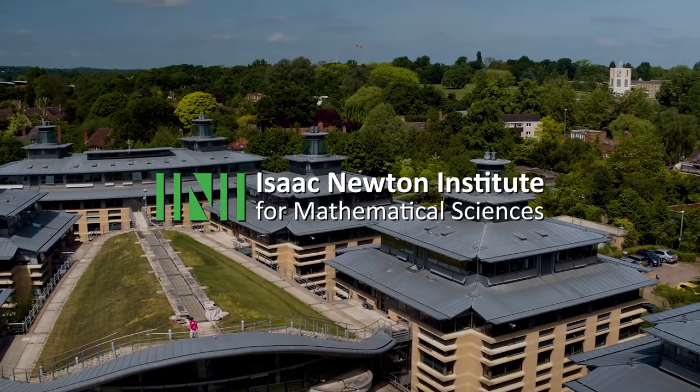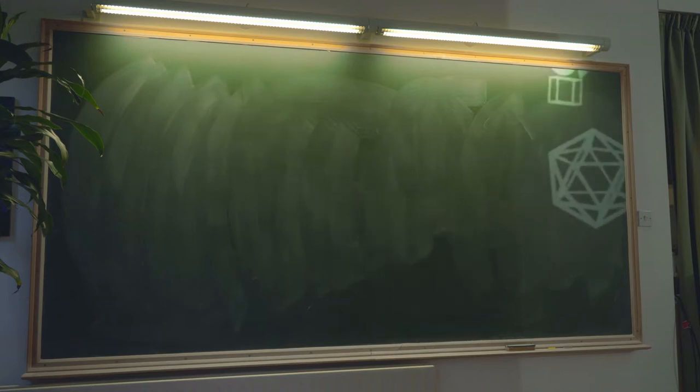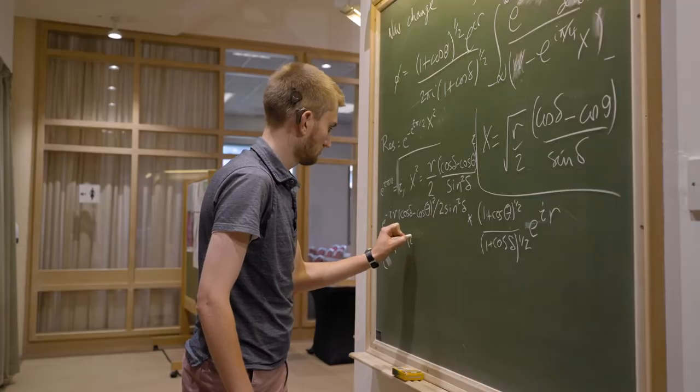The Isaac Newton Institute at its heart is there to serve society and humanity in general. Everyone recognises the power of mathematics and its value intrinsically. We try and realise that in a practical sense. We think about the short term, the medium term and the long term benefits of society through the mathematics we actually undertake here, but also the health of the discipline is maintained through the Institute.